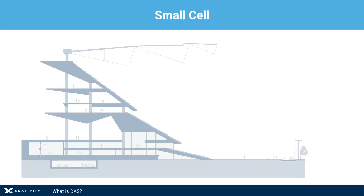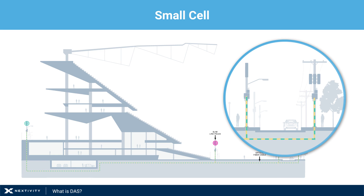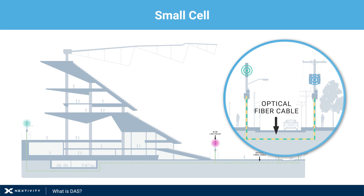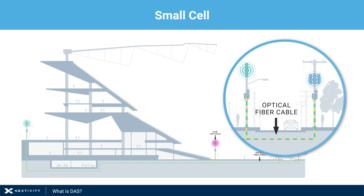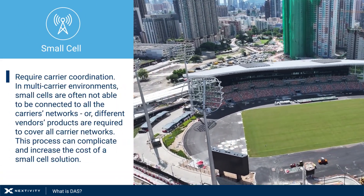Small cells are low-power base stations that are placed throughout a venue and connected first to a base station controller and gateway, and then to the carrier's network. Small cells add capacity and coverage to a venue and require backhaul to the carrier's network, but it often doesn't have to be dedicated like for fiber backhaul systems. Similar to legacy DAS, small cells require carrier coordination.